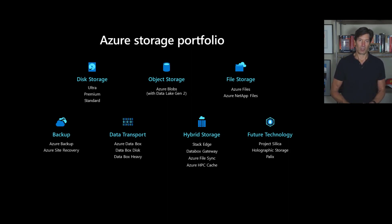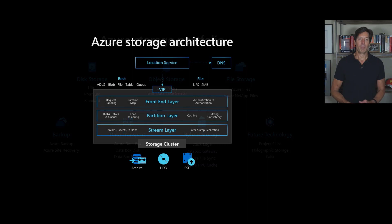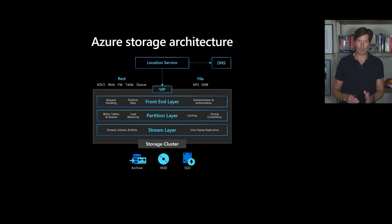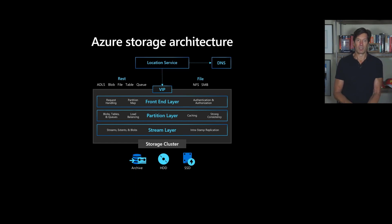The majority of our storage services are all built on top of the same common infrastructure — a common storage stack that consists of three layers: a front end, a partition layer that keeps track of the partitions and where they're located, and then the stream layer, which actually stores the different extents or actual data that consists of underneath files or blobs.